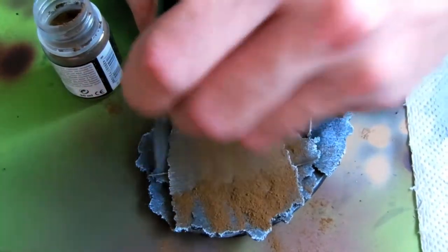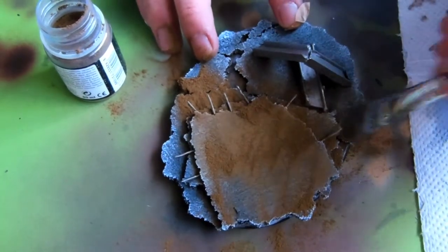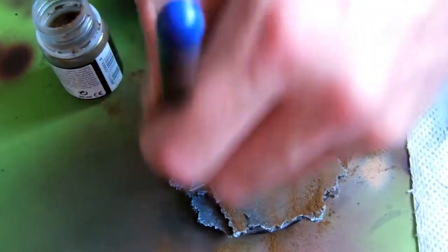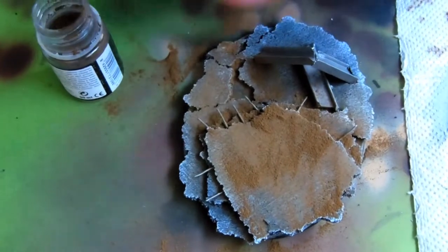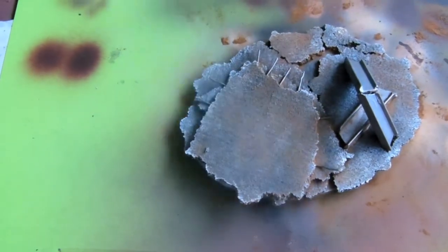I then put Vallejo Pigment Burnt Umber all over the concrete parts to dirty them up a little bit. It was then sealed with a matte varnish.